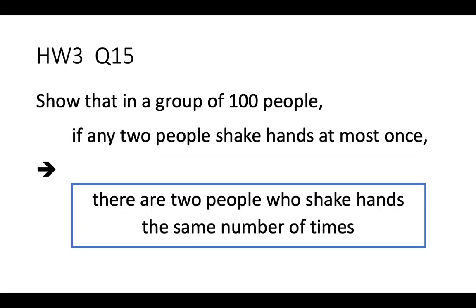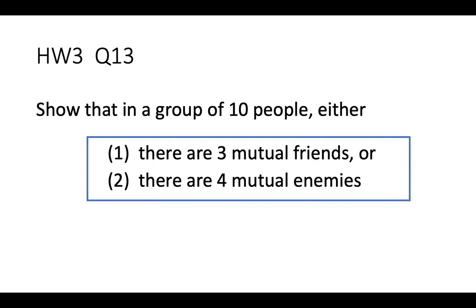Now let's talk about question 13. We have a group of 10 people, and we want to show that either 3 of them are mutual friends, or 4 of them are mutual enemies. This question is very similar to one we discussed in class — at that time we had 6 people and showed we must find 3 mutual friends or 3 mutual enemies. Now we change it to 10 people, and one condition changes from 3 to 4.